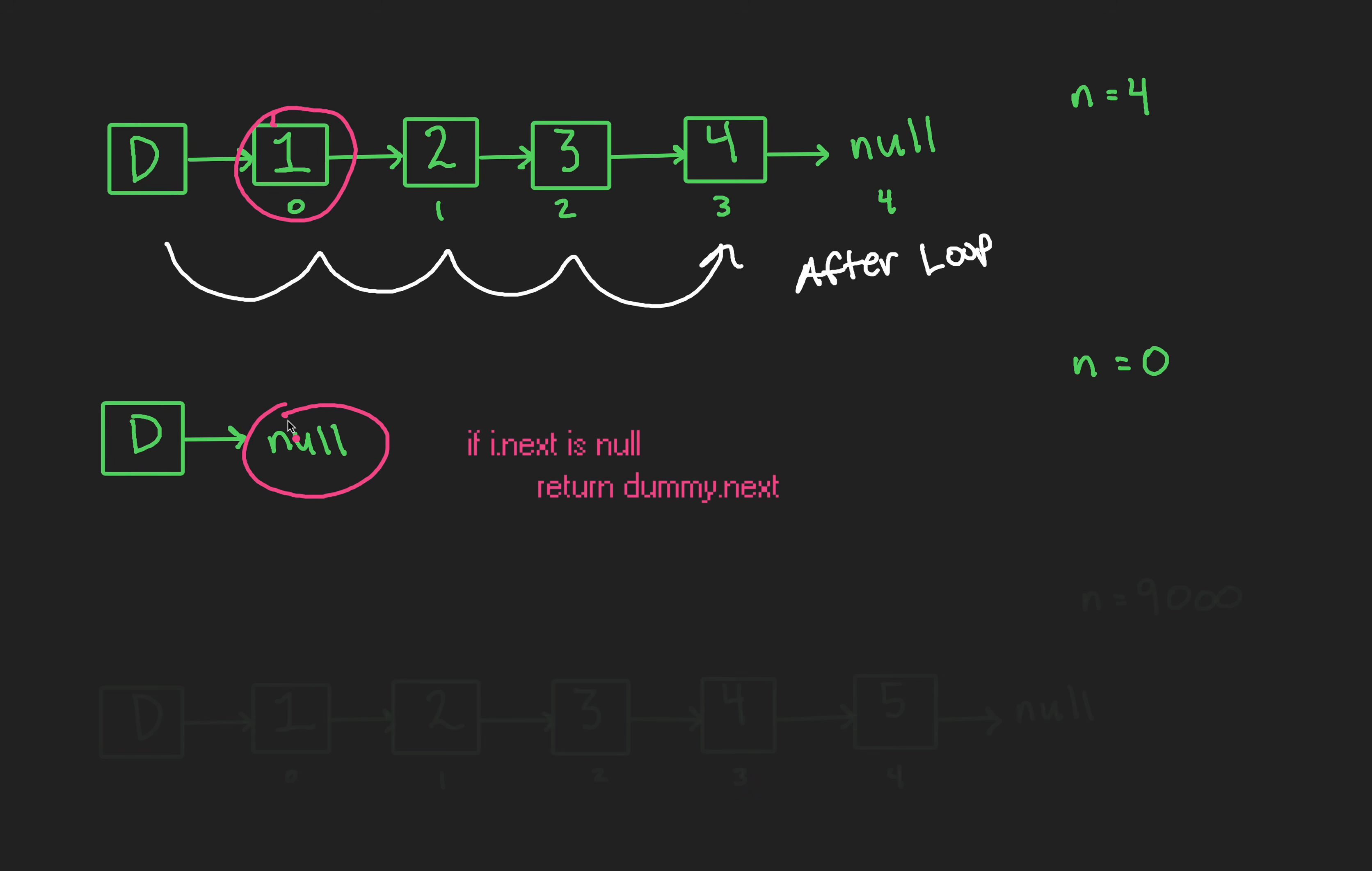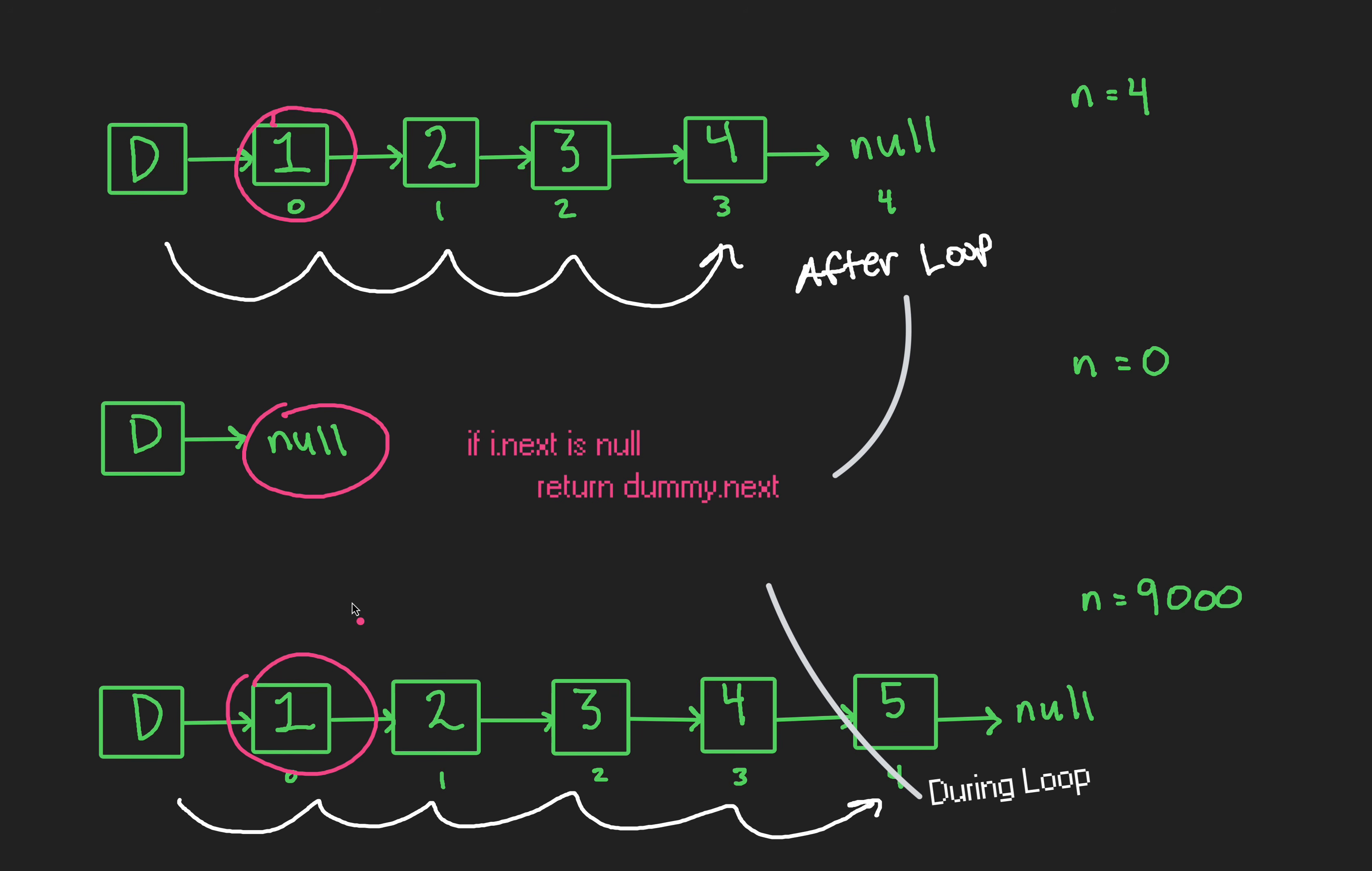But wait, there is more. What if we had 5 nodes and our n was 9000? Clearly, we'd run our for loop as per usual. And then realize, we shouldn't loop another 8000 and something something times. We should exit our loop early, and like before, return dummy next. That would be node 1. That'd be your answer. Fantastic, we have two if statements that don't bloat the implementation that much, and it covers some pretty critical edge cases. Okay, we're ready for the code.